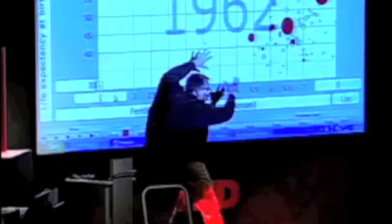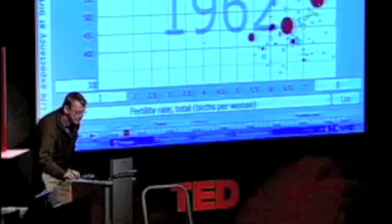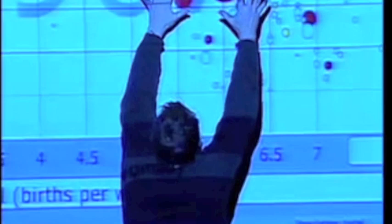It's still two types of countries. Or have these developing countries got smaller families and they live here? Or have they got longer lives and live up there? Let's see. We stopped the world. And this is all UN statistic that has been available. Here we go. Can you see there? It's China. They're moving against better health. They're improving there.